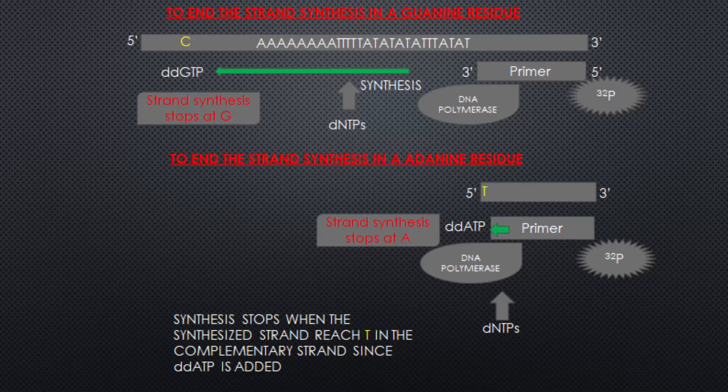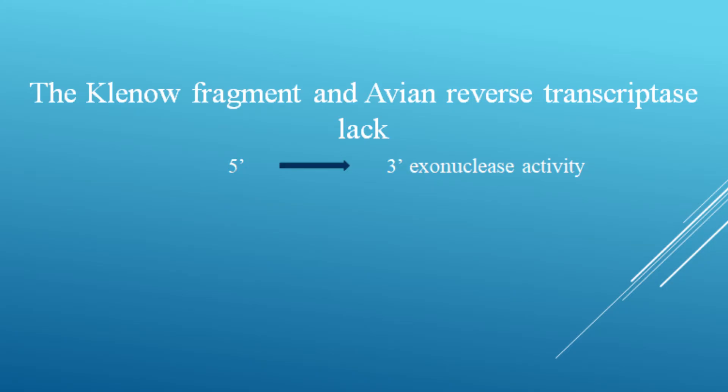The chain to be stopped at A has ddATP as a terminator, and likewise it is done for other nucleotides as well. The polymerase used is usually a Klenow fragment or avian reverse transcriptase, and appropriate alterations in the buffers and proportions of dNTPs are also made based on the enzyme used. Both polymerases lack 5' to 3' exonuclease activity.